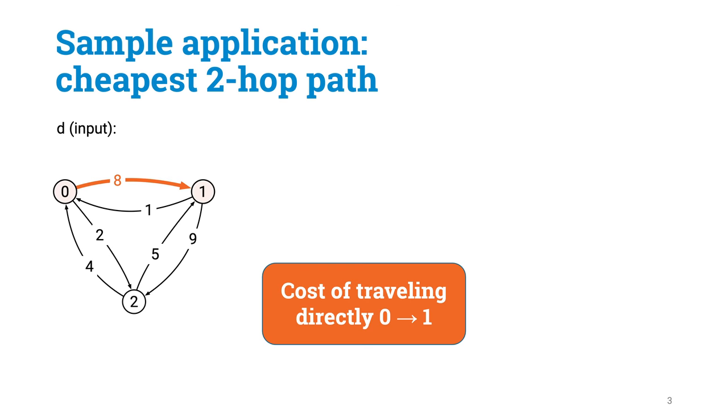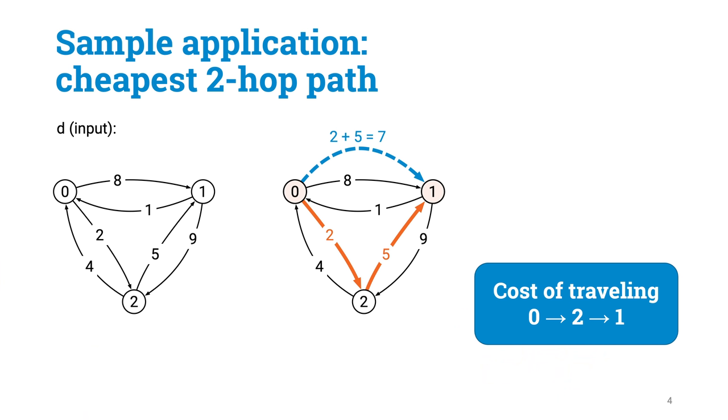For instance, here in this example the cost of traveling from 0 to 1 is 8. However, we can sometimes save money by taking a detour.